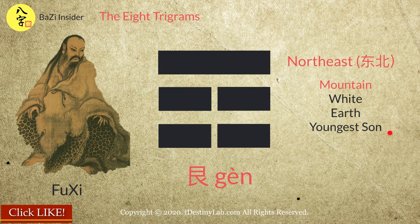The next Gua represents the north-east direction. It also represents the mountain, white colour, and the youngest son. Its 5 elements is earth.